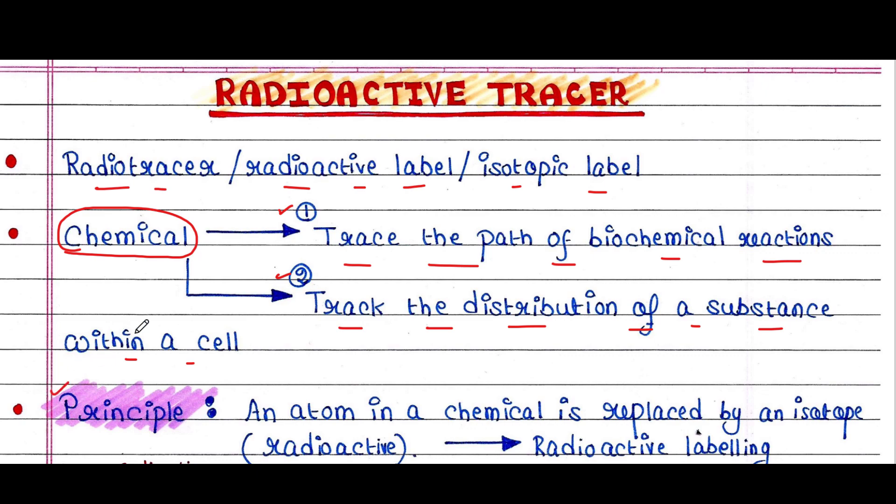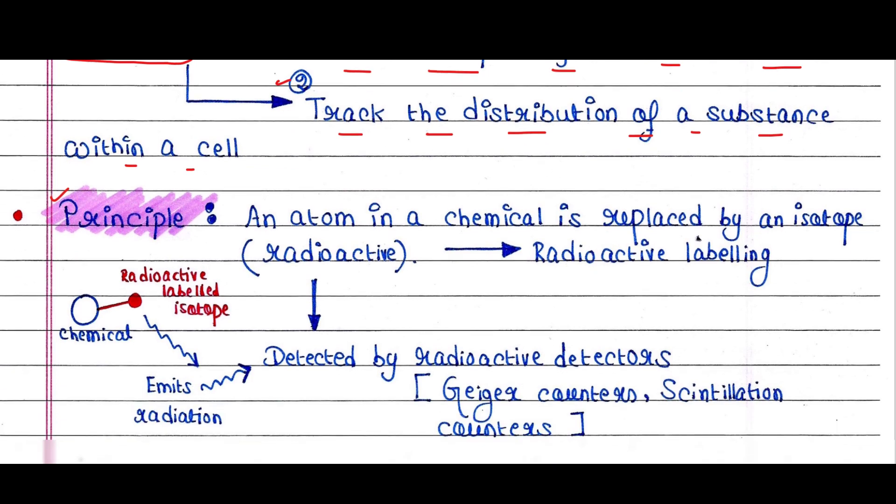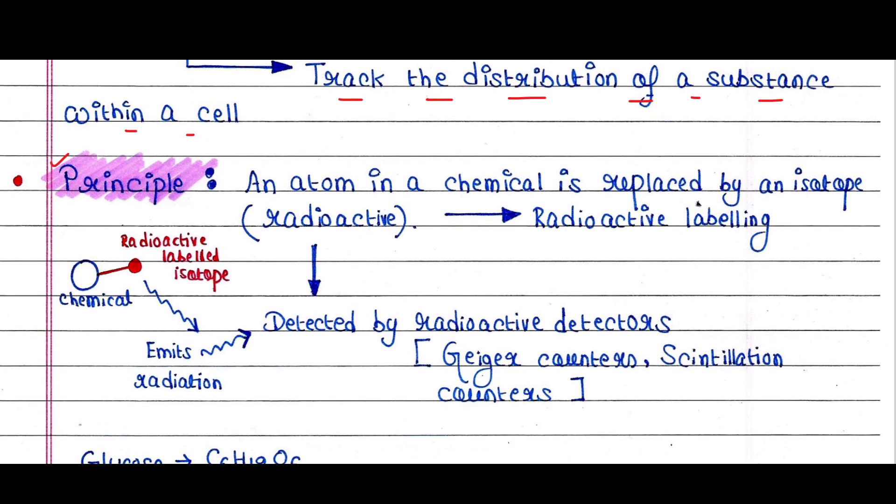Okay, so we know that a radioactive tracer is nothing but a chemical, right? Now a chemical is made up of atoms.